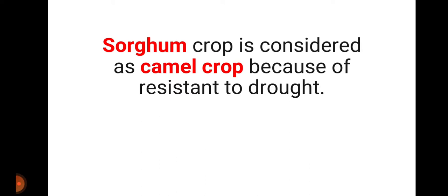Sorghum crop is also considered a camel crop because of its resistance to drought. It is named the camel crop due to its ability to grow in arid soil and withstand prolonged drought conditions.